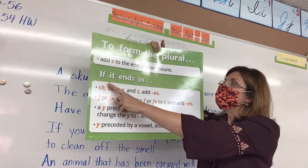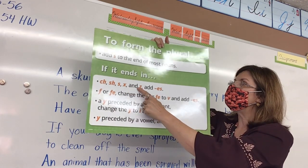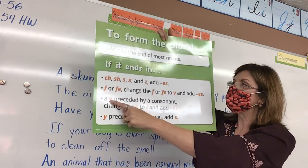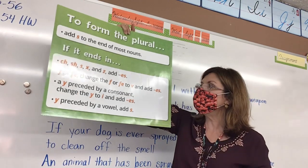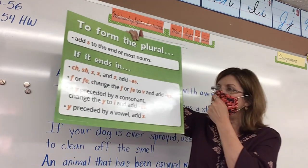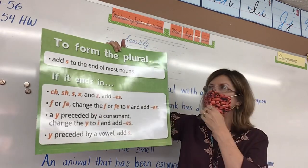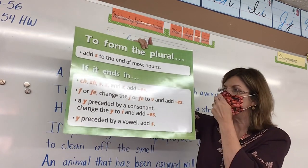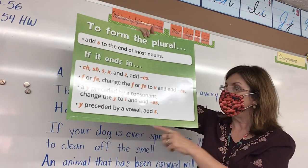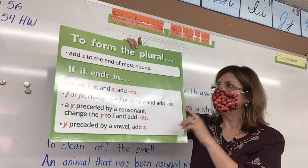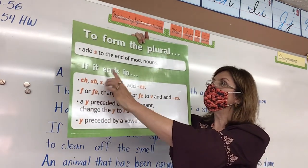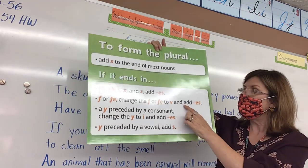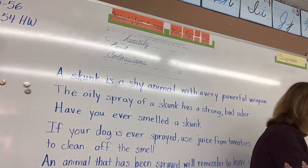Then we learned a rule: words ending in CH, SH, SS, or ES — you add ES. We're going to skip the new rule because that one's not on the quiz. For words ending in Y with a consonant in front, change the Y to an I and add ES. If there's a vowel in front of the Y, just add S. Our new rule from yesterday — words ending in F or FE, change the F or FE to a V and add ES — but that one's not on the quiz.